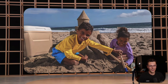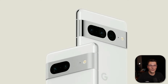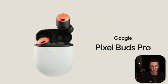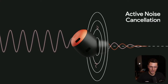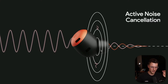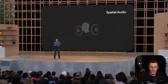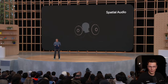They teased the Pixel 7, showing what it will look like — though it's not coming for a while still. They also announced the Google Pixel Buds Pro with noise canceling, transparency mode, and a special feature with extra noise cancellation to compensate for headphones that don't create a good seal. It has spatial audio as well, and you can find it when lost using the Find My Device feature.